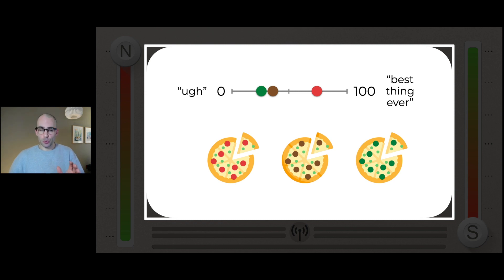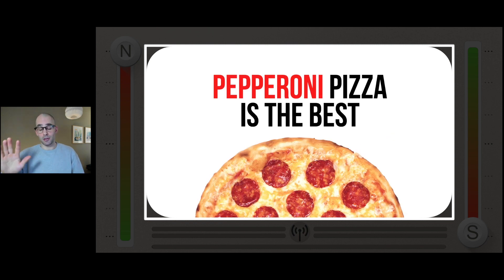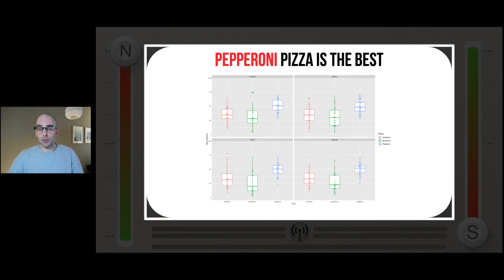Let us assume your big message, your communication intention, is: pepperoni pizza is the best. You don't have to agree with this, but let's just assume that's the message. This is actually not that far off from things we often talk about in science — we run studies with an intervention and a control, compare the two groups, and make a big fuss about when the treatment group differs from the control. This is what you often see in scientific journals or at conferences: you can't read anything because the font's too small, there are tons of information all over the place, and you don't even know where to look. In a conference presentation, you get only a very short moment to digest this information before the presenter moves on to the next slide.